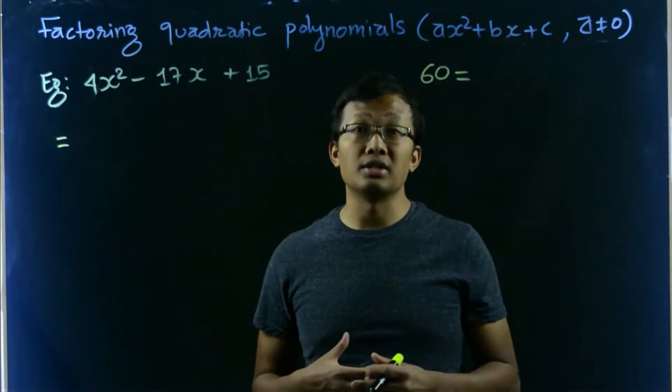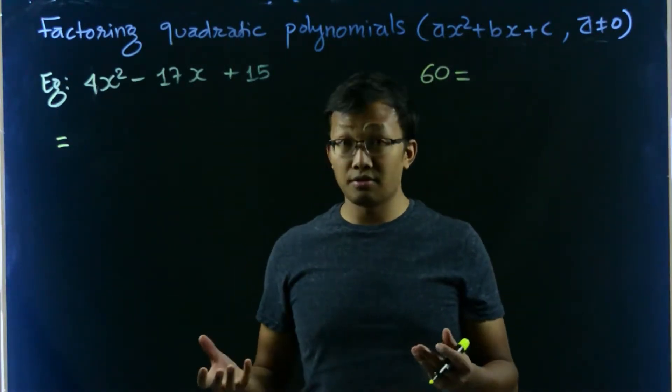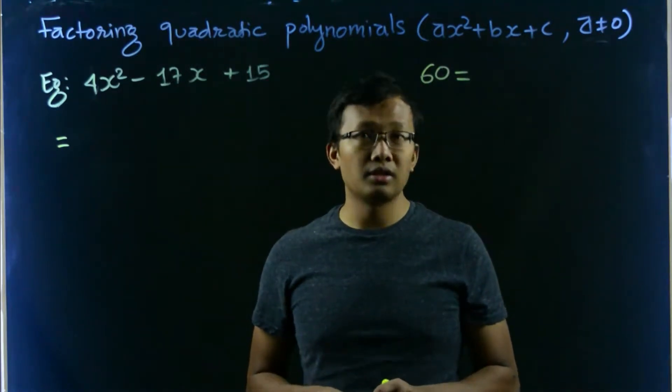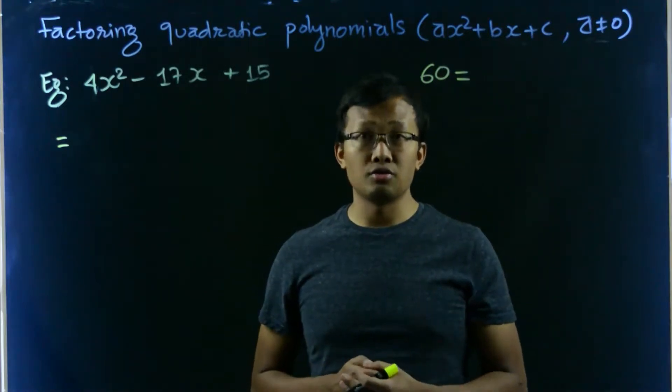So 20 times 3 is 60, difference is of course 17. Similarly, 12 times 5 is also 60 and their sum is also 17. So there are various ways to choose from.